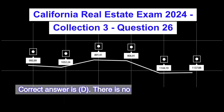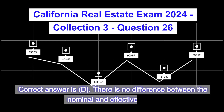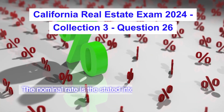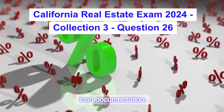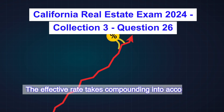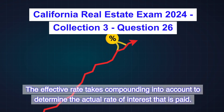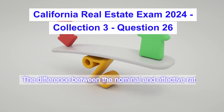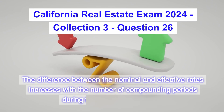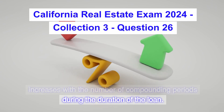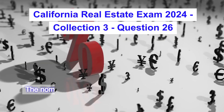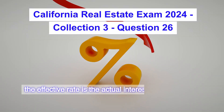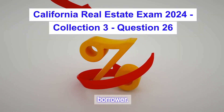Correct answer is D. There is no difference between the nominal and effective rates. The nominal rate is the stated interest rate stated in the loan documentation. The effective rate takes compounding into account to determine the actual rate of interest that is paid. The difference between the nominal and effective rates increases with the number of compounding periods during the duration of the loan. The nominal rate of interest is what is specified in the note; the effective rate is the actual interest rate paid by the borrower.